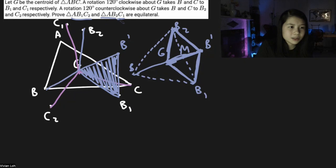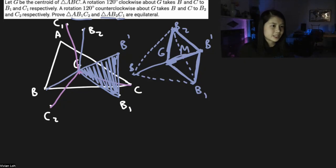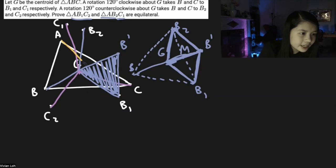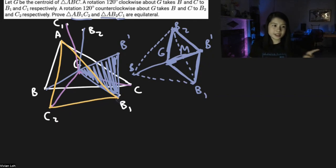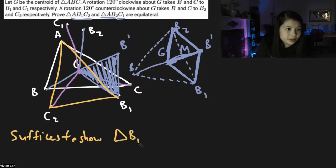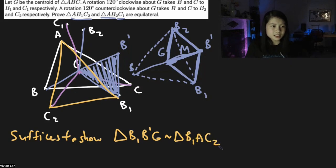It suffices to prove only one of the two triangles is equilateral, since the other follows by the same reasoning. I'll choose the bigger one: we want to prove triangle AB1C2 — the yellow triangle — is equilateral. Since the blue triangle B1B'G is equilateral, it suffices to show that triangle B1B'G is similar to triangle B1AC2.